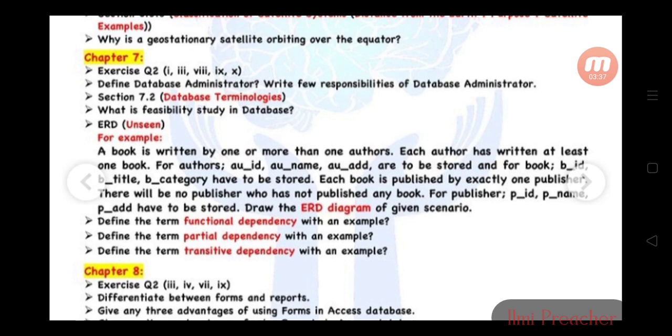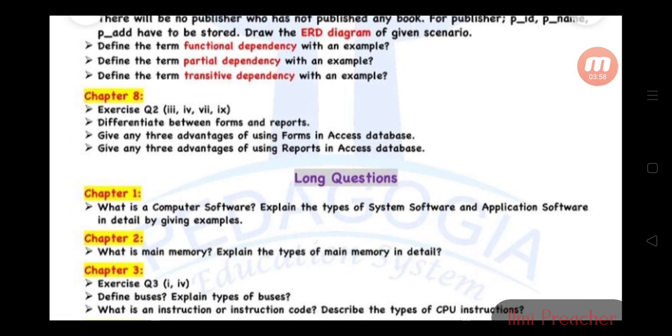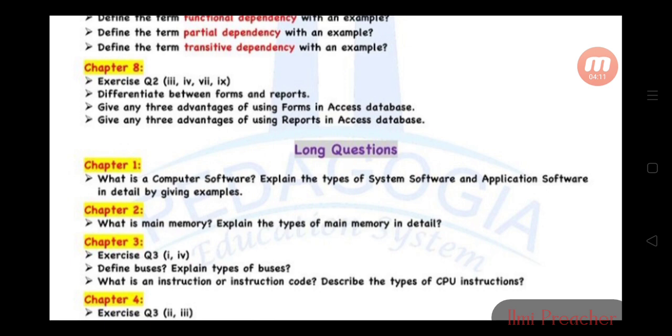Chapter 7, Exercise question 2: parts 3, 4, 7, and 9. Differentiate between forms and reports. Give three advantages of using forms in Access database. Give three advantages of using reports in Access database. For long questions: Chapter 1 - What is computer software? Explain types of system software and application software in detail. Chapter 2 - What is main memory? Explain the types of main memory in detail. Chapter 3, question 3, parts 1 and 4 - Define buses, explain types of buses. What is instruction code? Describe the types of CPU instructions.